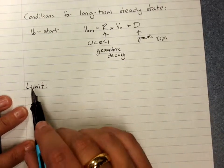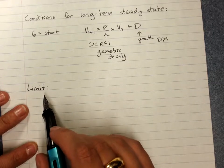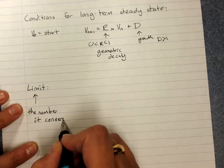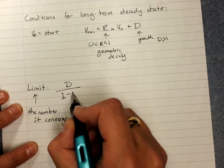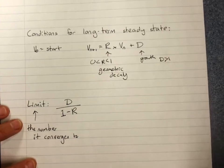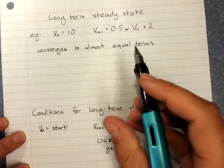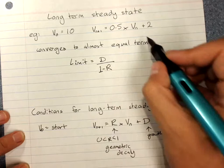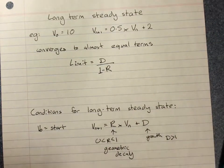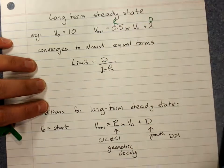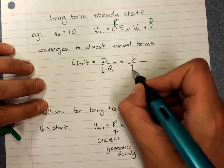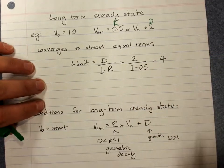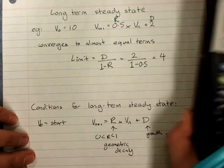The limit is the equation to find what the sequence converges to. The limit — the number it converges to — is d over (1 minus R), where R is the common ratio. So for our example with R = 0.5 and d = 2: the limit is 2 over (1 minus 0.5) = 2 divided by 0.5 = 4. And indeed it was getting closer and closer to 4.